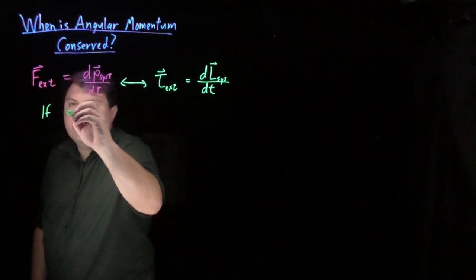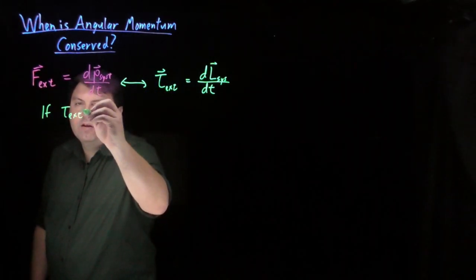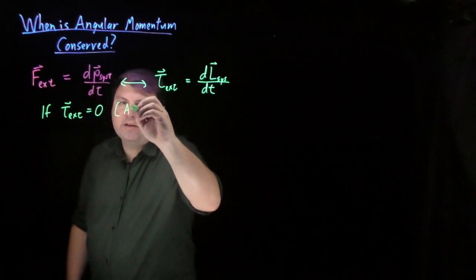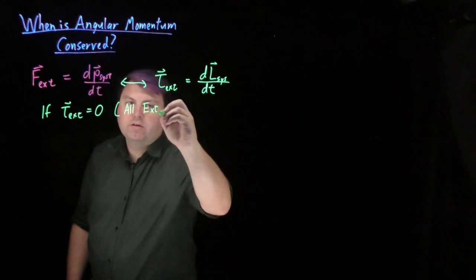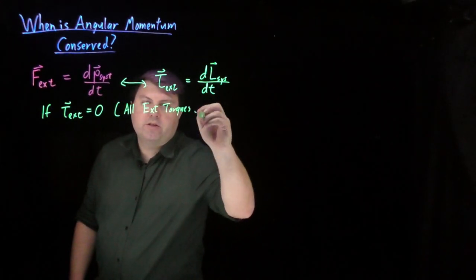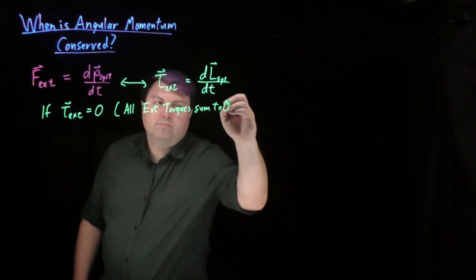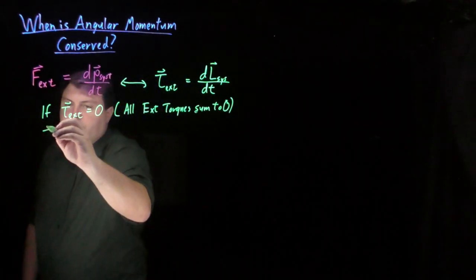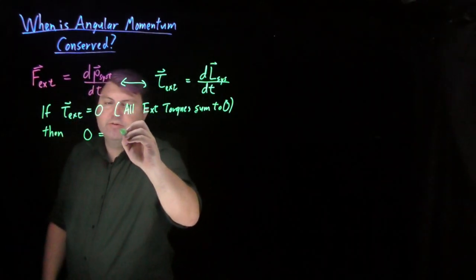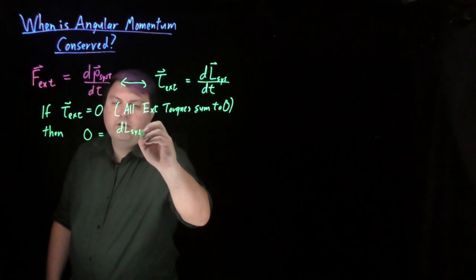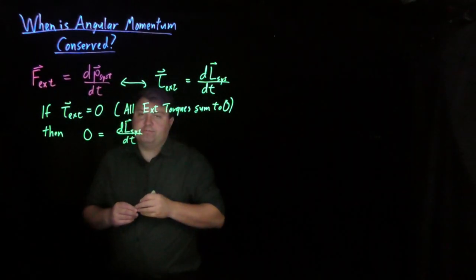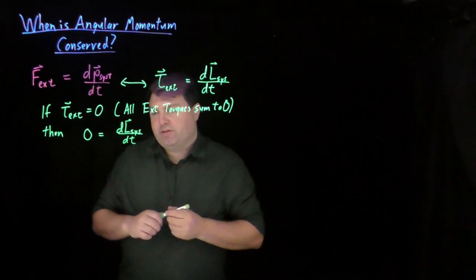We get an interesting thing that if the external torque is zero, we're saying that all external torques sum to zero, then what this means is we're saying zero is equal to dL of the system with respect to time, which means that the derivative is equal to zero.